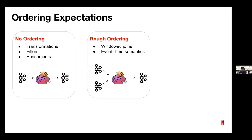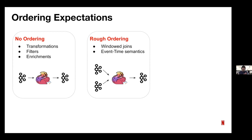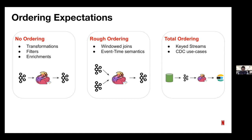Then there's another class of applications that basically expected some rough ordering. These were typically applications that joined streams and used event time semantics, making assumptions about how data was ordered when being read. For these applications, you have to provide some rough ordering guarantees — I'll go deeper into what rough ordering means in the next slides. And then there was another class that actually depended on Kafka ordering guarantees, making assumptions around total ordering of messages within a partition — typically CDC use cases have these assumptions.